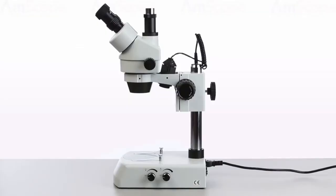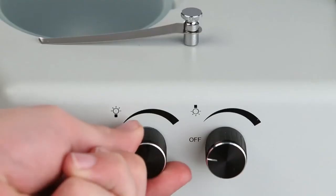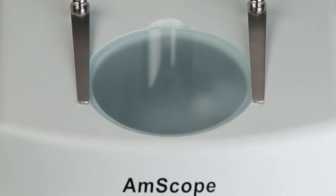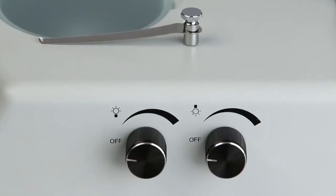The microscope has two switched dimmer knobs. The knob on the left controls the bottom lighting. The knob on the right controls the upper lighting.